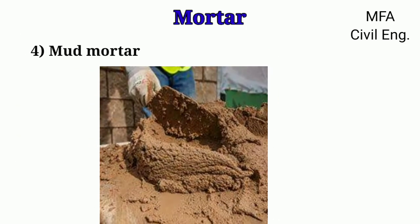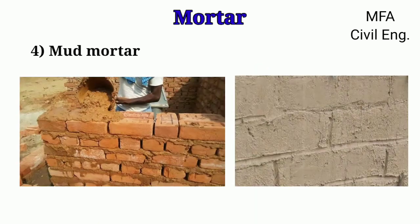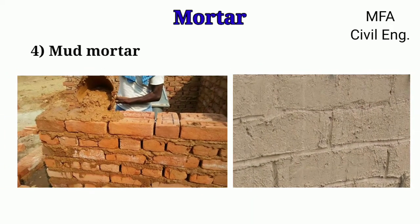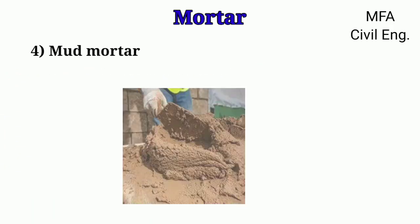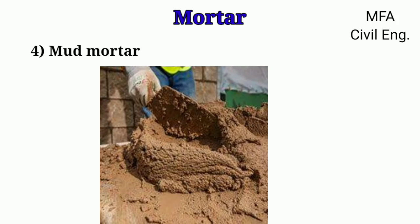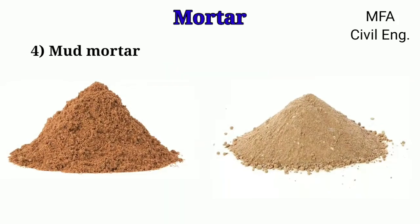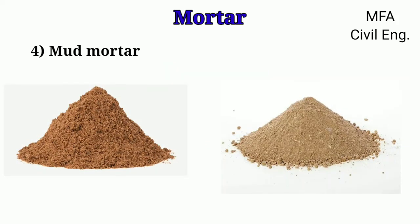Mud mortar is simply a mixture of clay and water and is used for cheap houses. In villages, use of mud mortar is very common for masonry and plastering work. For making mud mortar, red soil or yellow soil is used as it has more plasticity and a low shrinkage limit.